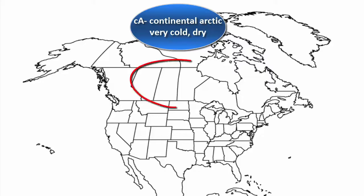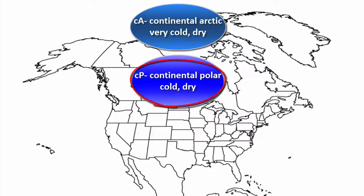The next air mass forms over the middle of Canada. This is called a continental polar air mass. Draw another oval and label it lowercase c, uppercase P — the map symbol for continental polar. Continental means it's forming over land, so it's going to be dry. Polar means it's forming in a colder area, so these air masses are cold and dry, though not as cold as the Arctic air masses because they're not as far north.